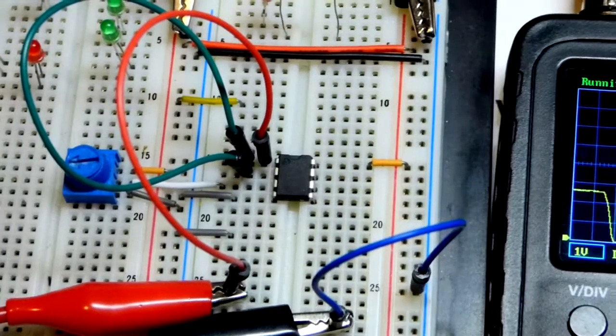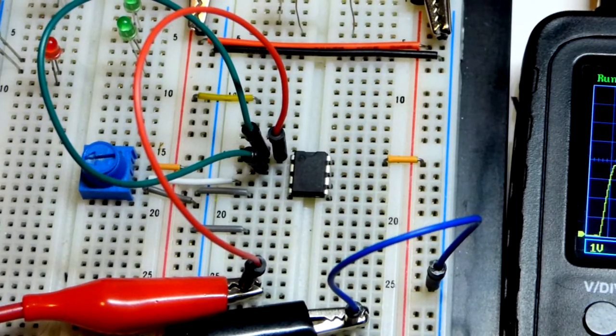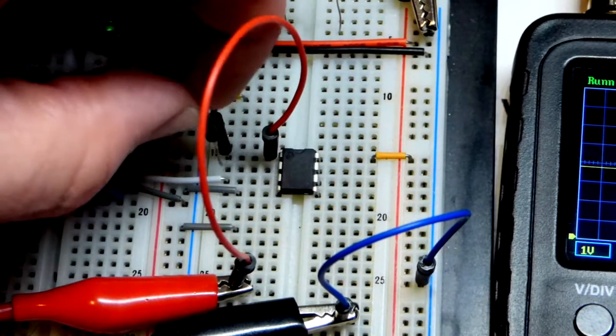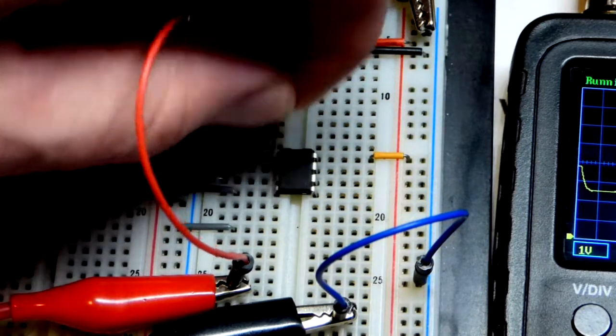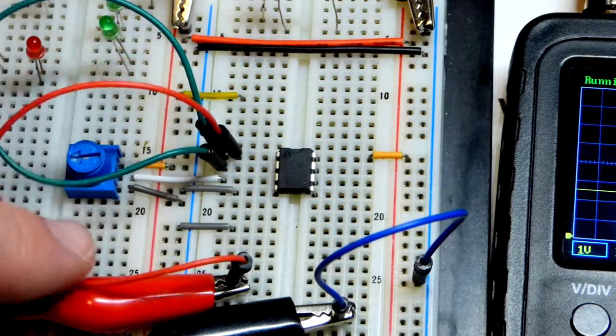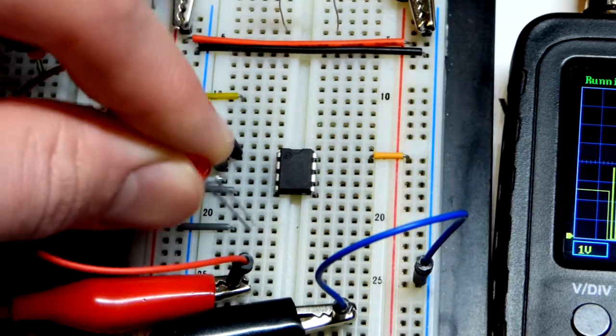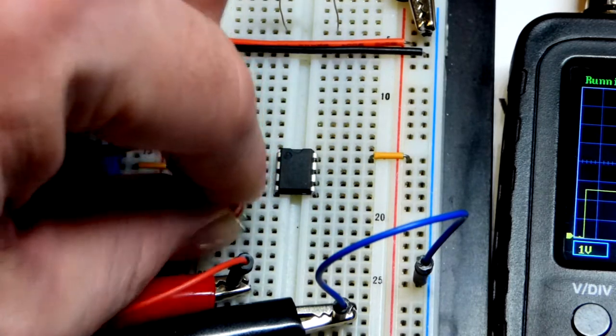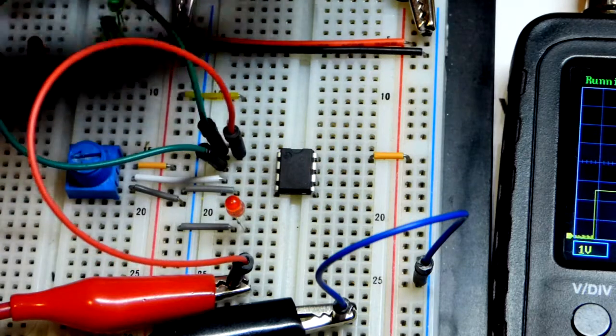Now, what we're going to do is we're at the output here and move this jumper over. We're still going to look at the output, but now we're going to add an LED. So short lead the cathode. I'm going to put to that gray jumper, long lead the anode up one row. So we're going to forward bias it.